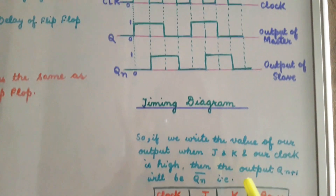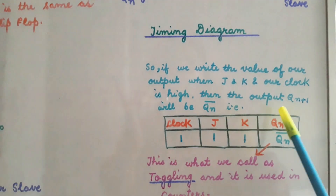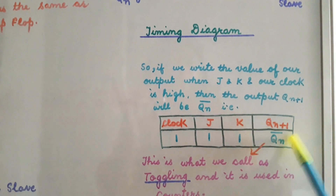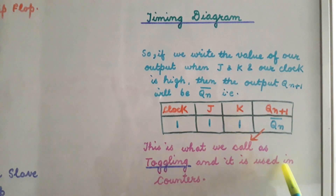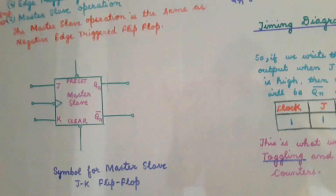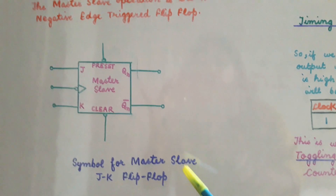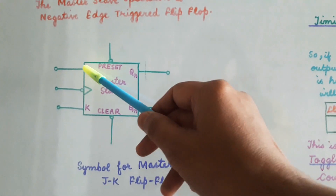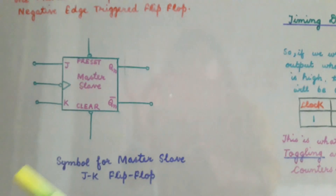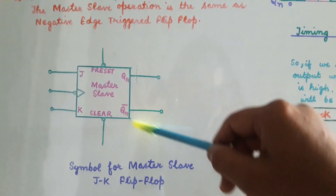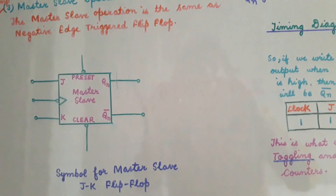When the value of J is 1 and K is 1 and the clock is also 1, the value of Q_(n+1) will be Q_n-bar. This is what is called toggling and it is used in counters. The figure here shows the symbol for the master-slave JK flip-flop. There are three inputs: J, K, and clock. This clock is negative-edge triggered — that is why a bubble has been shown. These are the outputs Q_n and its complement Q_n-bar. This is the preset input and this is the clear input.